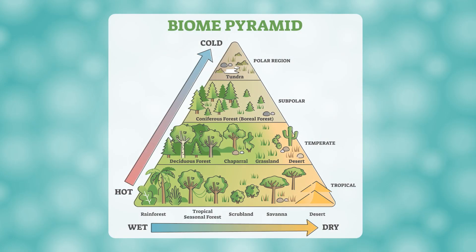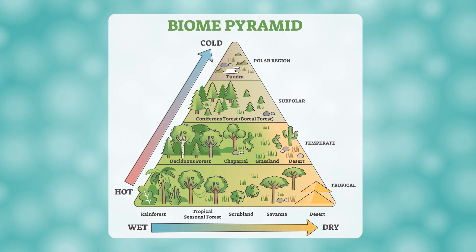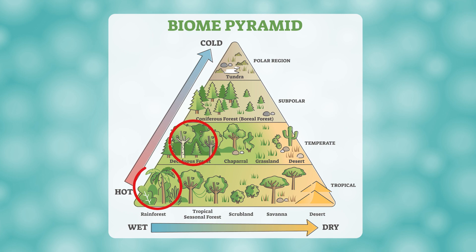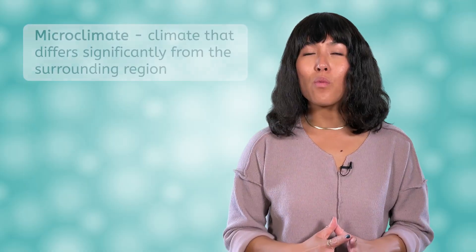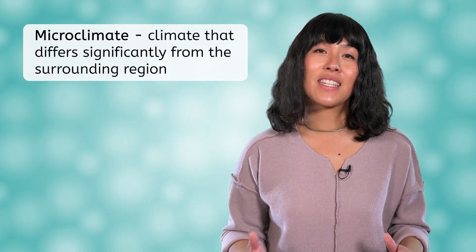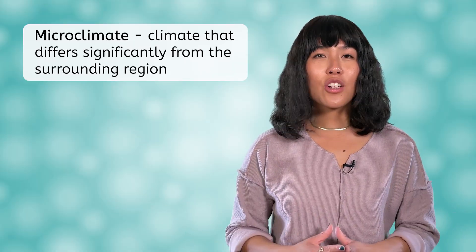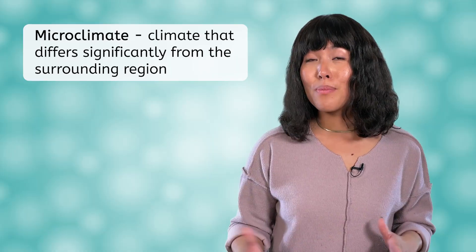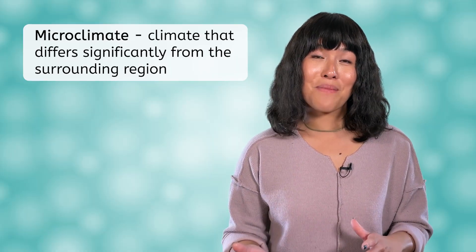In our biome pyramid, the warmer biomes are at the bottom, which include the rainforest, seasonal forest, scrubland, savannah, and desert. The biomes generally get cooler as we go up through the temperate and subpolar zones until we reach the tundra, where we would find our polar bear family. On the left side of the pyramid, we have wet biomes such as the rainforest and deciduous forest, but the biomes dry out as we move right until we reach the deserts. While biomes are known for these climate patterns, the climate will not be completely uniform across an entire biome. Microclimates will appear in certain areas that differ significantly from the surrounding region. This can occur because of the topography of the land and nearness to bodies of water. You'll learn more about microclimates in the lesson PDF.